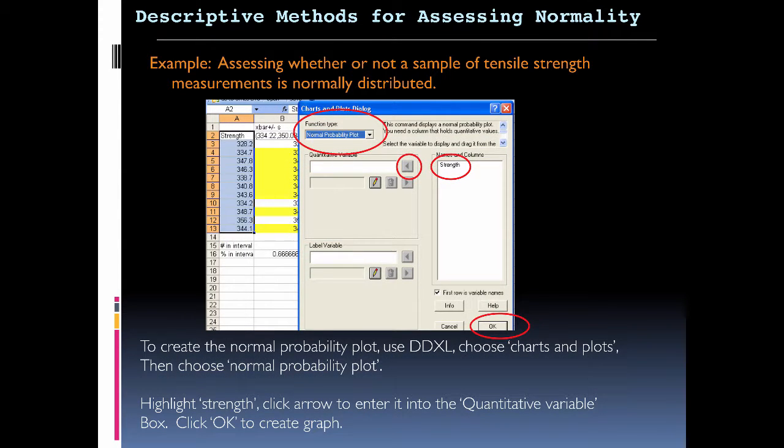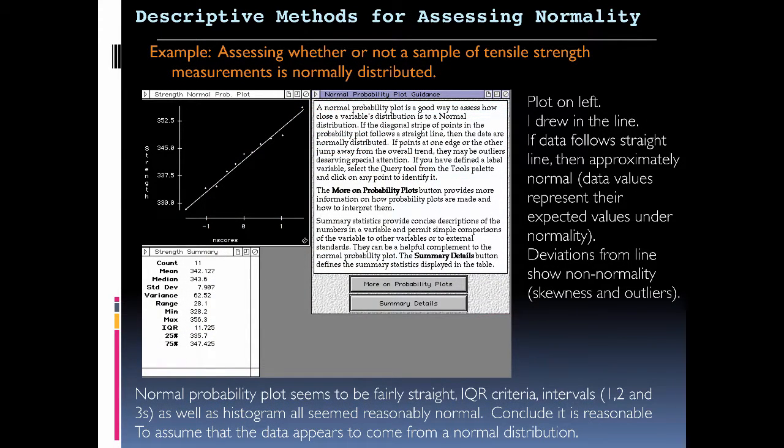Then we want to create a normal probability plot. Here's how we set this up: normal probability plot. Here again, we're looking for strength, and then we click OK. This is an example of what you'll find. The normal probability plot seems to be fairly straight. The IQR criteria, intervals one, two, and three, as well as the histogram, seem reasonably normal. So we can conclude that it's reasonable to assume that data appears to come from a normal distribution in this example.